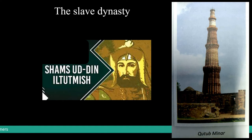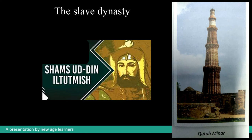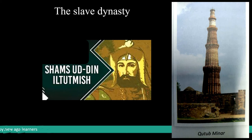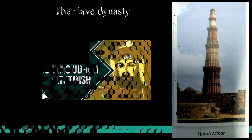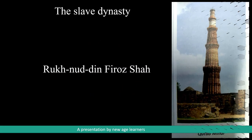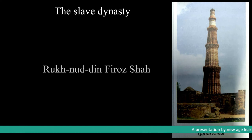In order to have an effective and efficient administrative system, he organized a group of 40 nobles called Chahalgani. Iltutmish had many sons but did not find any of them worthy, so he made his daughter Razia the Sultan of Delhi. This decision was not liked by conservative nobles, who had become very powerful.